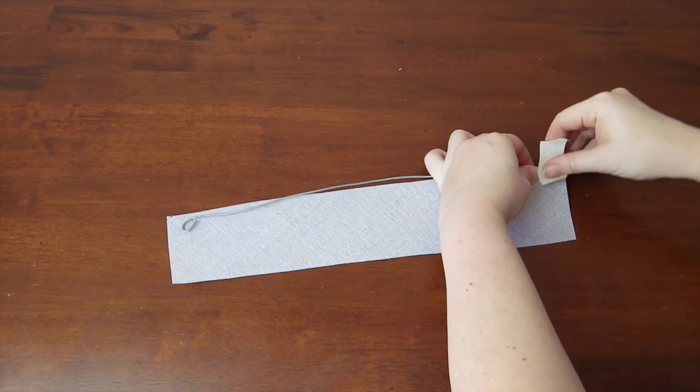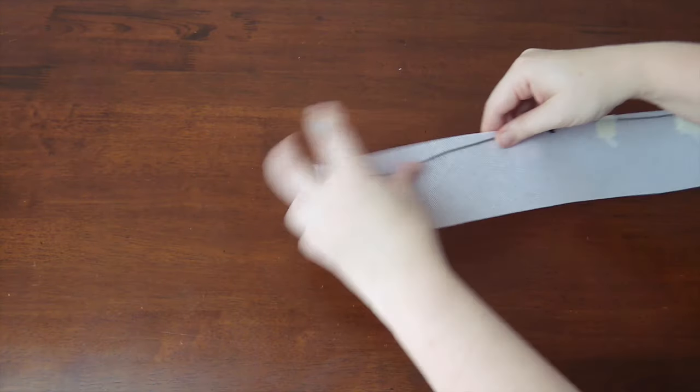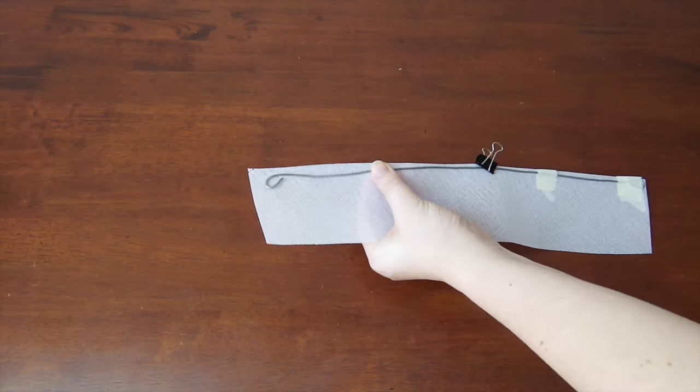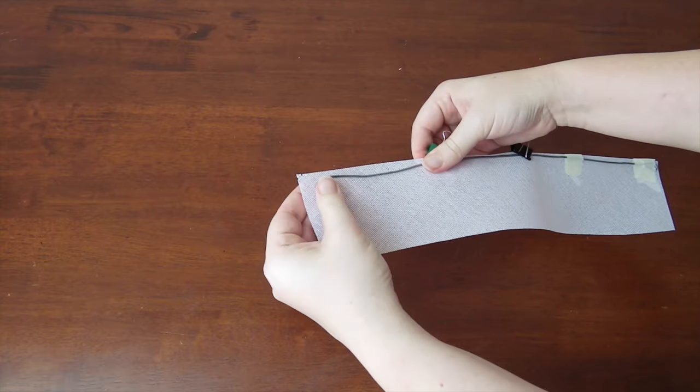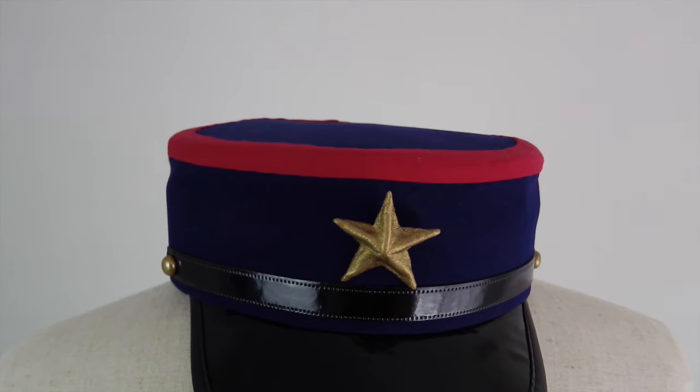Then secure it to your base, like this buckram strip, by either using tape or bulldog clips. Finally, sew it in, either by hand or by using a very wide zigzag stitch on your sewing machine, if it will allow it. Here is an example of where I've used wire in the top of a hat.